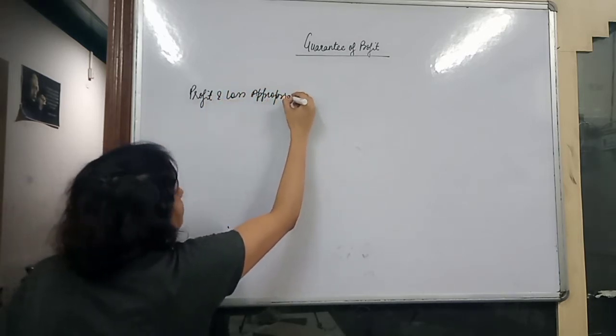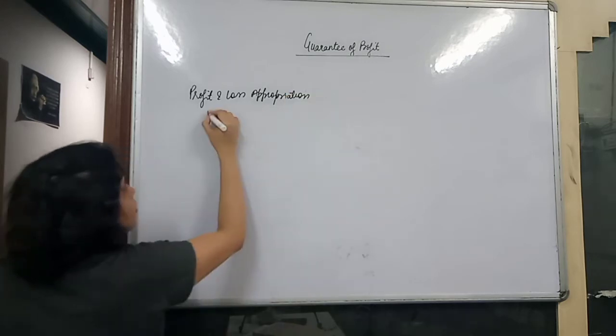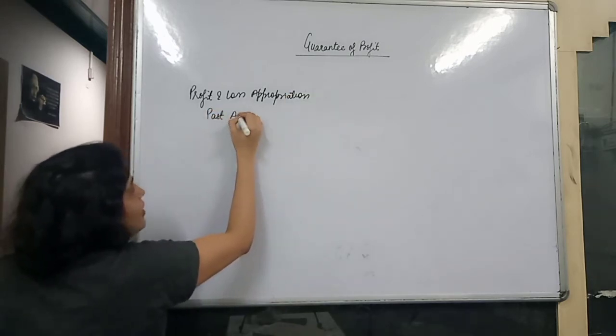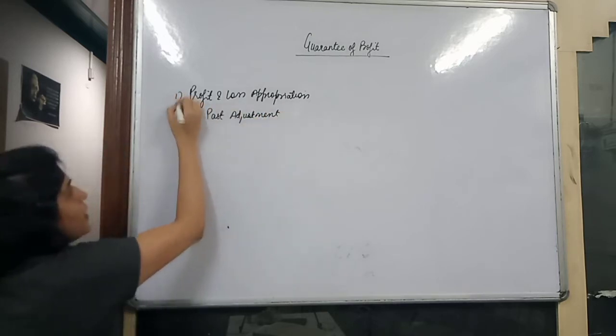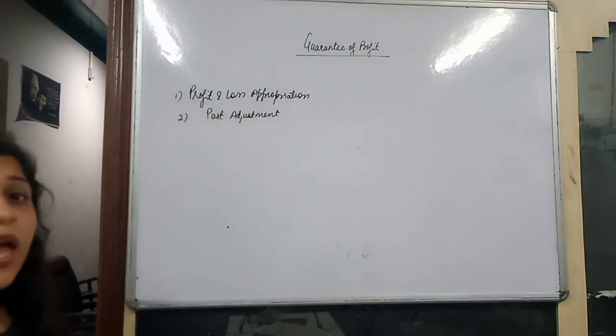Here, we will solve this by making journal entries. P&L Appropriation Account will be made, or pass/journal entries will be made.